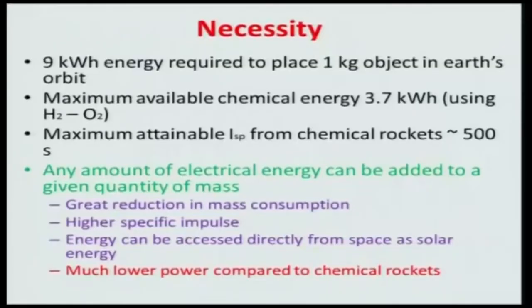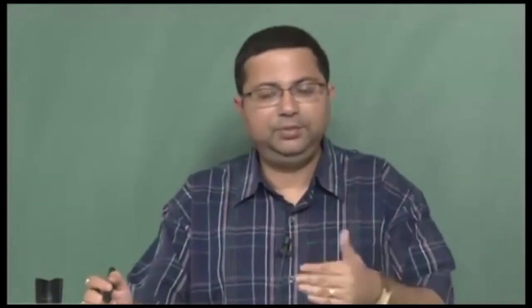Another advantage of electric propulsion is that the electrical energy can be accessed directly from space as solar energy. Solar cells can absorb solar radiation and produce electrical energy which can then be used for propulsion. You do not have to separately carry an energy source or fuel. There will be a conversion of this electrical energy to thrust power, which is much more economical compared to chemical energy and not limited by velocity factors. However, the problem is that the amount of power produced will be much less, because the energy conversion efficiency is much lower compared to chemical rockets.